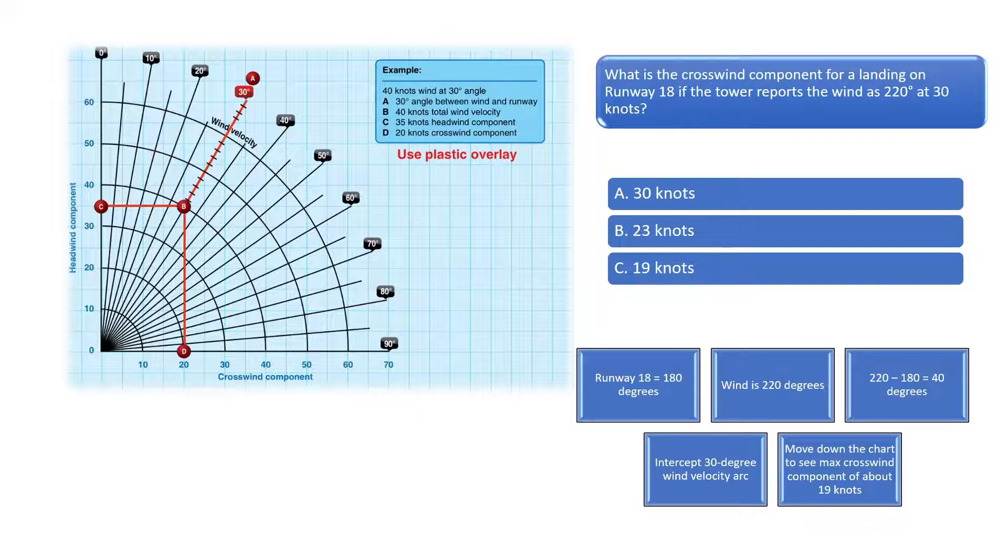Remember, runway numbers are aligned with their corresponding magnetic headings. Since the difference between the wind direction and runway heading is 40 degrees, draw a line on the 40-degree marker on the chart, as illustrated by the blue arrow. Draw a line for the corresponding wind velocity. We would draw the line to intercept the 30-degree arc on the chart, as shown by the yellow line.